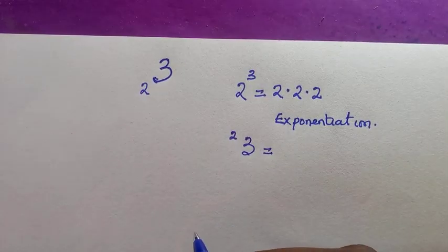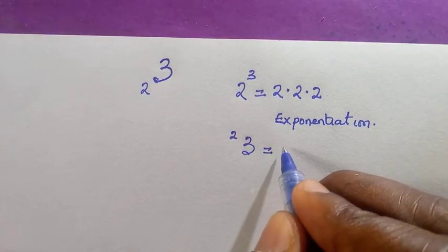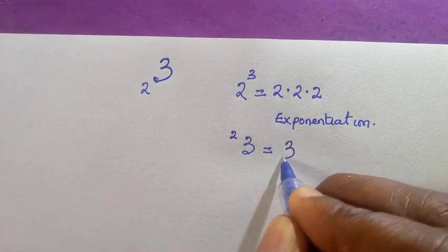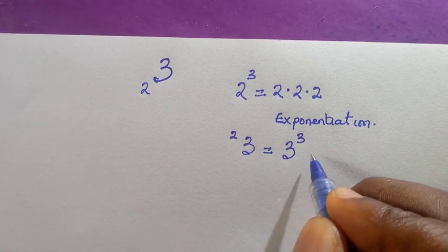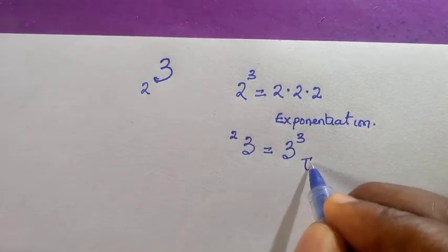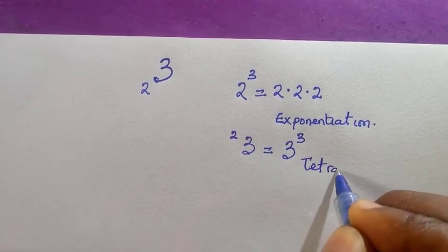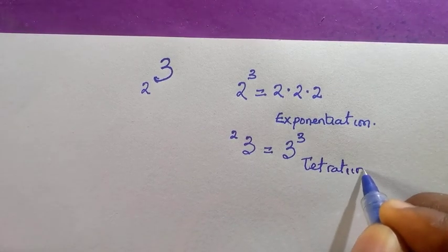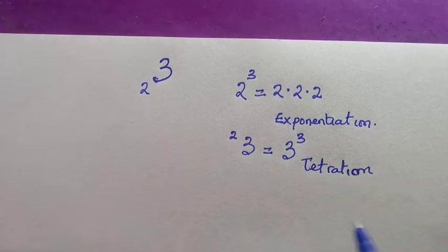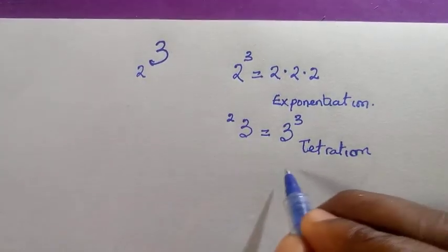We call this tetration. That is the left power, when the base is carrying the power at the left. So I can also call it repeated exponentiation, which is very common as tetration.